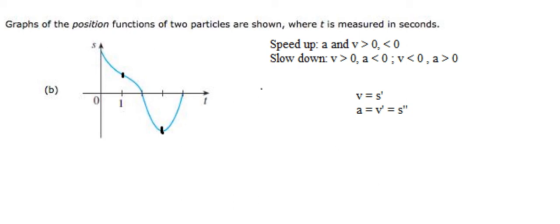I will draw the sign chart here according to the position function. You can see that they are going down in this way, which means the velocity function should be here. Then it touches number one because we had a critical point of S — that's why we have V equals zero. From one to two, they are negative in this slot.